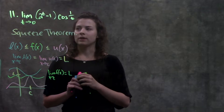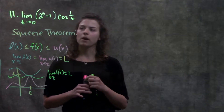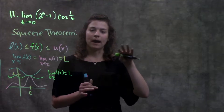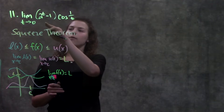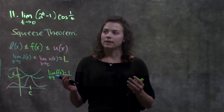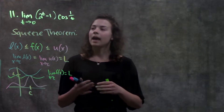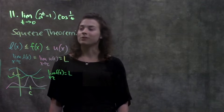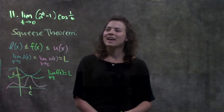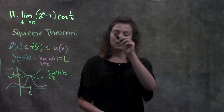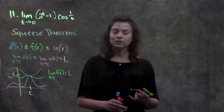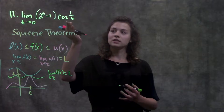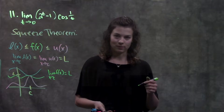Looking at this function, we want to find a part that has a defined maximum and minimum value. The first part, two to the t minus one, doesn't have any limit — it can be any number. But the second part, cosine one over t — thinking back to the cosine graph or unit circle — the most cosine can be is positive one, and the least it can be is negative one. So cosine is bound by negative one and positive one, and that's where we'll start.